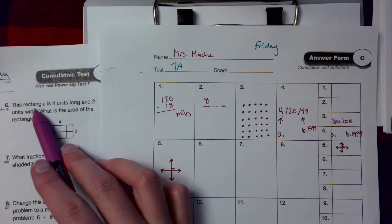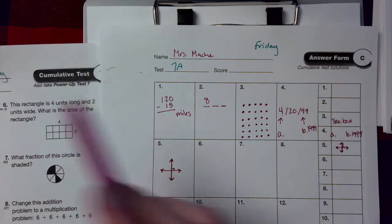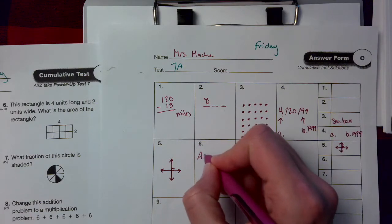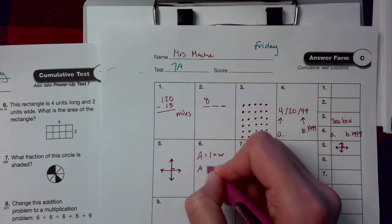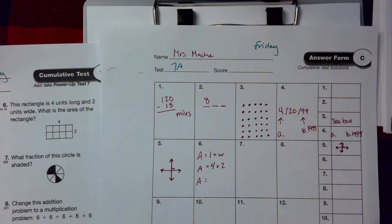Number 6. This rectangle is 4 units long and 2 units wide. What is the area? Well, area equals our length times our width. So area is going to equal 4 times 2. So what's 4 times 2? That'll be your area.